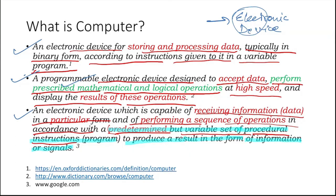The computer is an electronic device for storing and processing data in binary, according to instructions in a variable program. This device is capable of having some set of instructions — and everywhere you will see that instruction is common. A set of instructions forms a program.